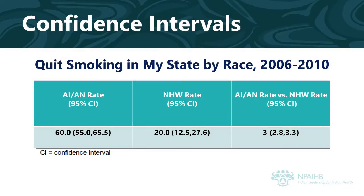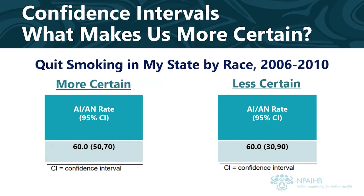Confidence intervals allow you to say that if you pull the sample from the population 100 times, 95 out of those 100 times, the estimate, or the rate that you see, will be contained somewhere in the confidence interval — the numbers in parentheses. What makes us even more certain in the estimate, or the rate that you see, is if the confidence interval is smaller. A range of 50 to 70 is generally better than a range of 30 through 90 — there's less room for error.